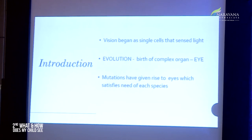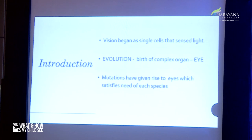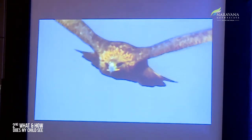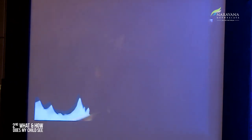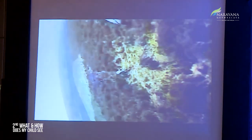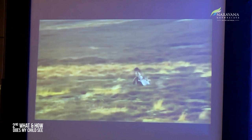If you look at predators, they have more frontally placed eyes, which enables them to have depth perception so that they can accurately target their prey. Whereas in the case of prey, they have laterally placed eyes, which enables them to have a wider field of vision. For example, predators like eagles and wild cats have frontally placed eyes with very superior visual acuity, since eagles must track their prey from a height.